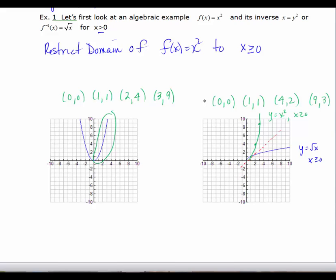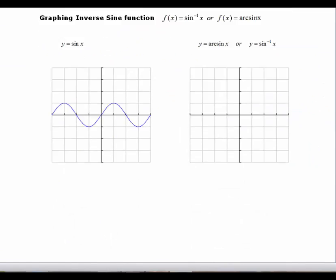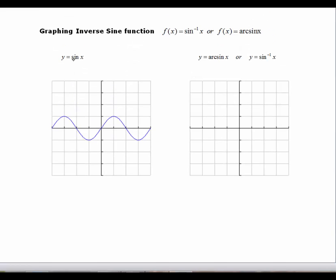Now we want to look at the trigonometric functions, and we know that none of the trigonometric functions are 1 to 1. So we're going to have to restrict our domain. So let's start by looking at the graph of y equals sine x, and this window that I've chosen here is from negative 2 pi to 2 pi.